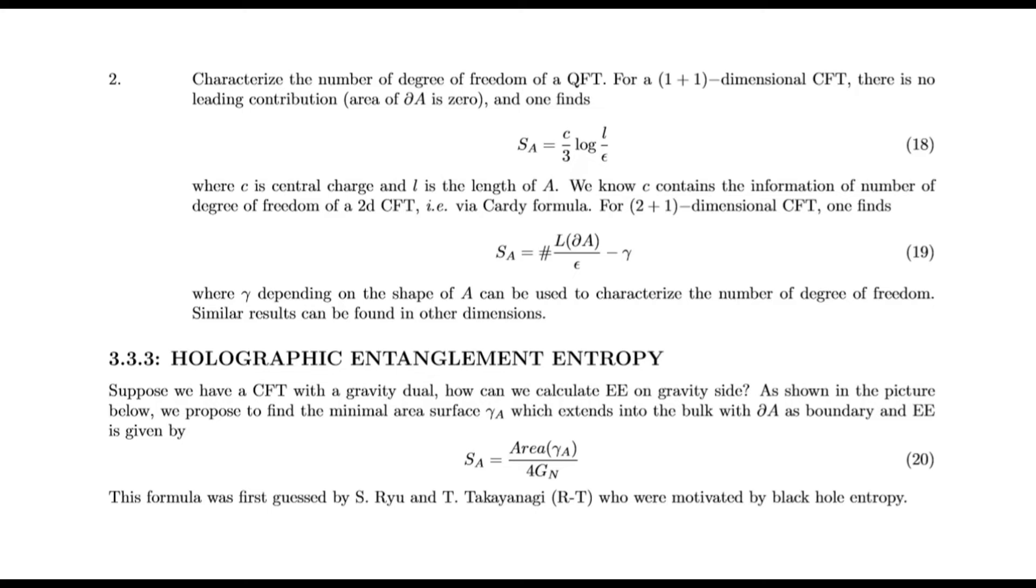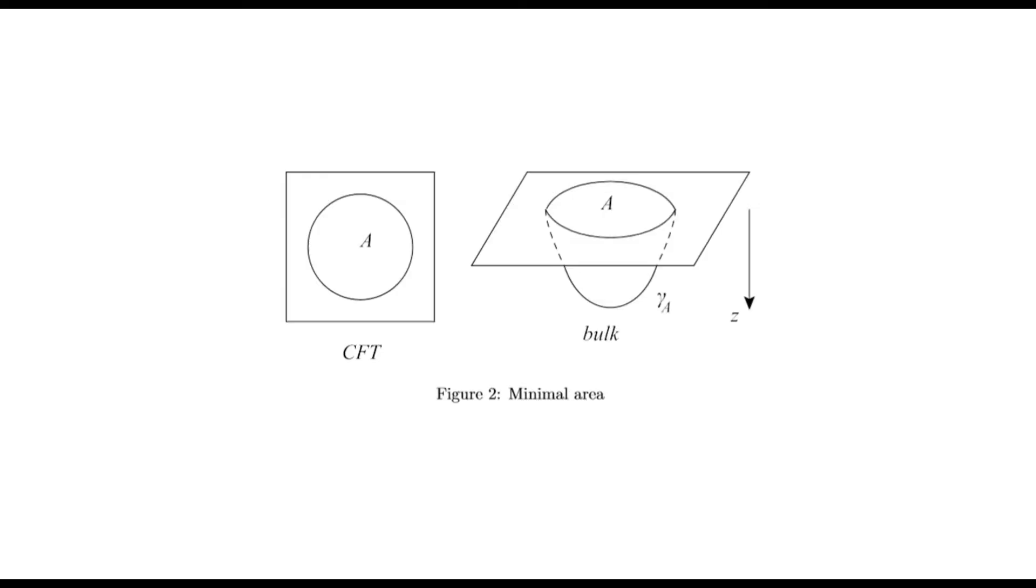Holographic entanglement entropy: Suppose we have a CFT with a gravity dual. How can we calculate entanglement entropy on the gravity side? As shown in the picture, we propose to find the minimal area surface γ_A which extends into the bulk with ∂A as boundary, and entanglement entropy is given by Area(γ_A)/(4G_N). This formula was first proposed by Ryu and Takayanagi, who were motivated by black hole entropy.